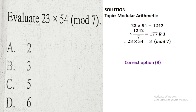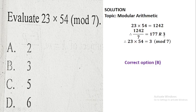Question number five: evaluate 23 × 54 in mod 7. This is modular arithmetic. Multiplying 23 × 54 gives 1242. Since this exceeds mod 7, divide 1242 by 7: 1242 ÷ 7 = 177 remainder 3. The remainder 3 is our answer. So 23 × 54 in mod 7 = 3, which is option B.